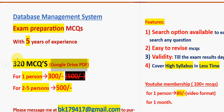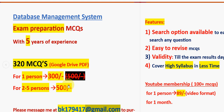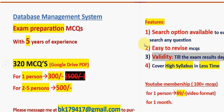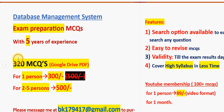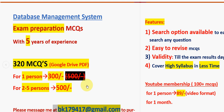For one person it is 300 rupees only. If you take it along with your friends or classmates, for two to five persons combined it is 500 rupees only, and everyone in the group will get the PDF. Mail to bk179417 at gmail.com. Validity will be till the exam results day. High syllabus will be covered within less time, making it easy to revise.